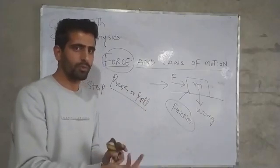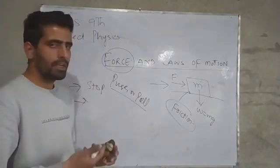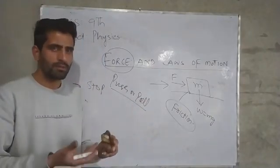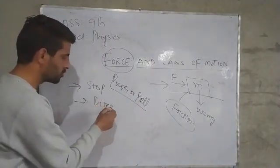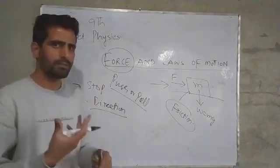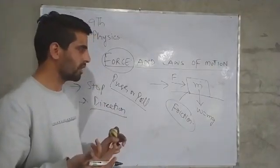So in all these cases the external agency in the form of push or pull in the first case tries to move a body or moves it, produces motion in it. Second, tries to stop a moving body or stops it. Third, tries to change the direction of motion of a moving body or changes the direction of motion of a moving body.